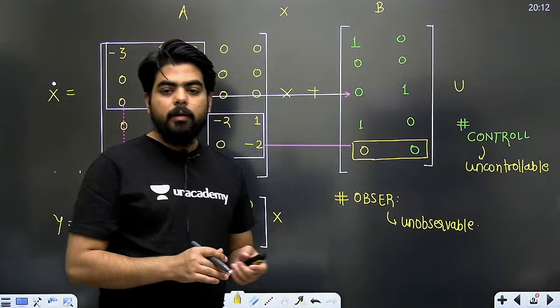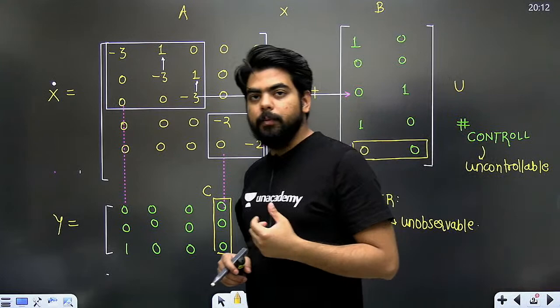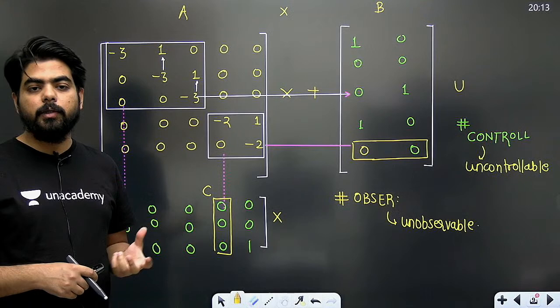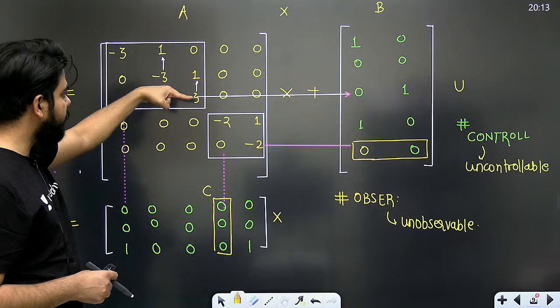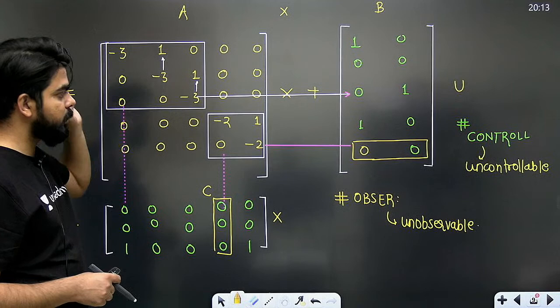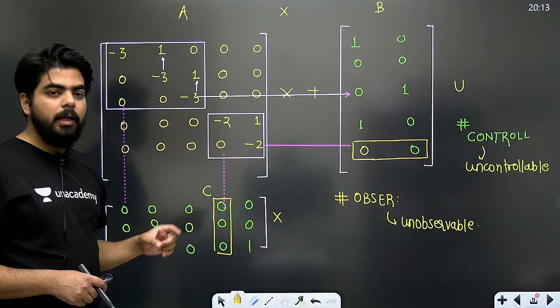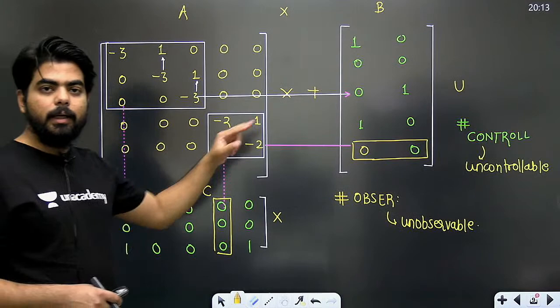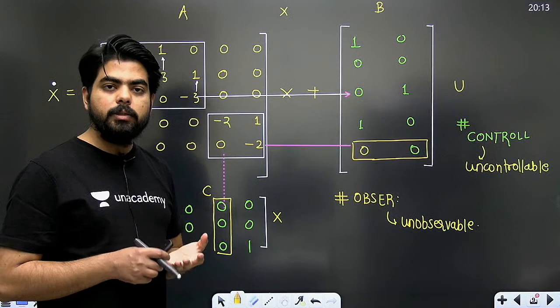आ गया ना logic सभी को? तो किसी को doubt रह गया क्या इस particular topic में? एक बड़े से question ने आपके सारे doubts clear कर दिए - कब system controllable हो सकता है, कब नहीं, कब observable हो सकता है, कब नहीं। Simple काम यह है: जो भी A matrix दी हो, उसमें Jordan blocks ढूंढो। Controllability के लिए: हर एक Jordan block के last row के corresponding सारे elements 0 नहीं होने चाहिए। Observability के लिए: हर एक Jordan block के first column के corresponding सारे elements 0 नहीं होने चाहिए।